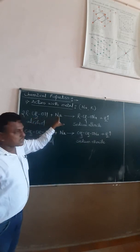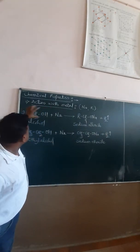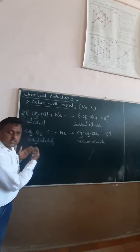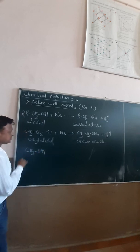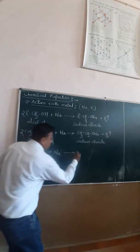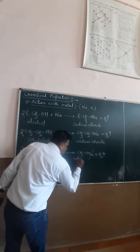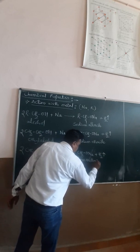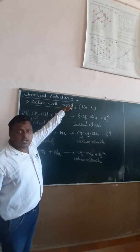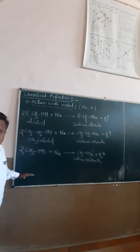Keep in mind: alcohol reacts with sodium metal to form sodium alkoxide. You can also use potassium — alcohol reacts with potassium to form potassium alkoxide. For example, in place of ethyl alcohol, consider methyl alcohol CH₃OH. CH₃OH reacts with sodium metal to form CH₃ONa and releases hydrogen gas. The name of this compound is sodium methoxide. This is the first reaction — reaction of alcohol with metals. Our target is the formation of alkoxides.